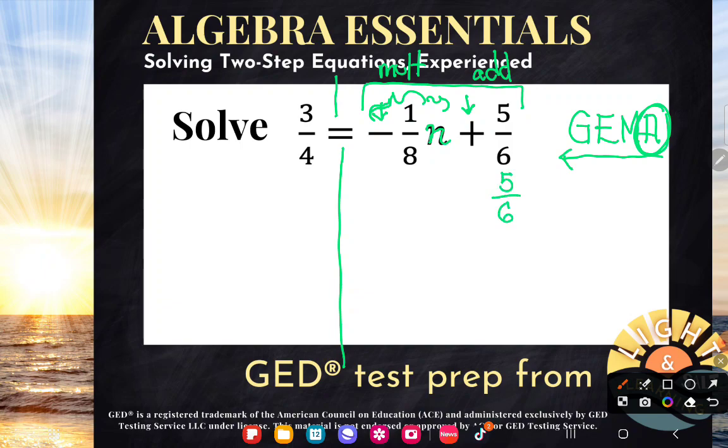Now, how am I going to get rid of the 5/6? By doing the opposite, the opposite of what it's doing. So it's adding, so I will subtract, okay? Now I can do whatever I want as long as I do it to both sides. So guys, travel. Get all the way across the equal sign.